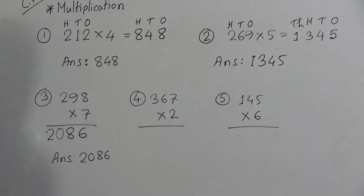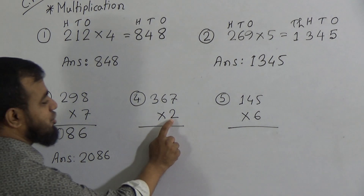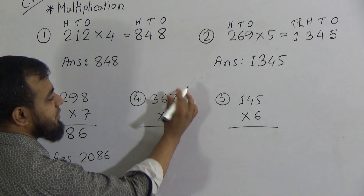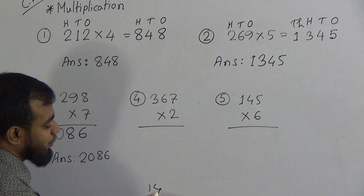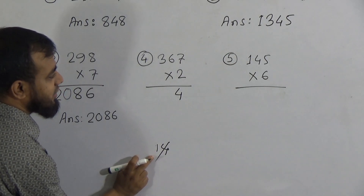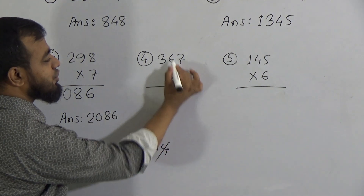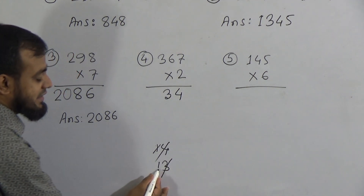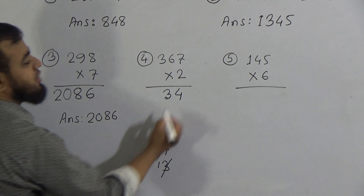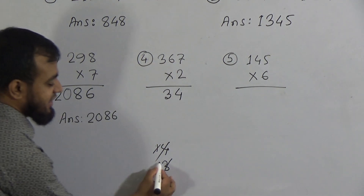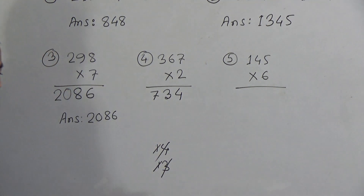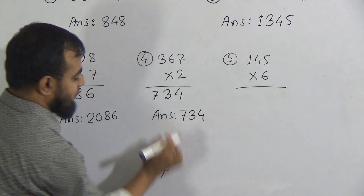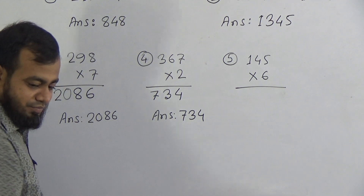The next number is 4: the multiplication of 367 by 2. Using the times table of 2: 2 7's are 14 — write 4 in the 1's place, carry 1. Then 2 6's are 12, and 12 plus the carried 1 makes 13 — write 3 in the 10's place, carry 1. Finally, 2 3's are 6, and 6 plus the carried 1 makes 7, written in the 100's place. The answer is 734. Always remember to write down the answer, or your teacher will not give you full marks.